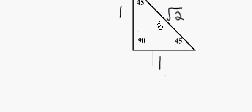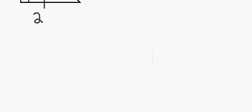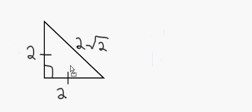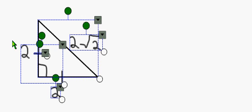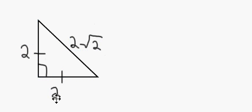Let's say your leg changes like this, and you got a 45-45-90 degree triangle. Let's say the leg is 2 — what do you do? You got a 2 to the 2 to the 2 Radical 2.